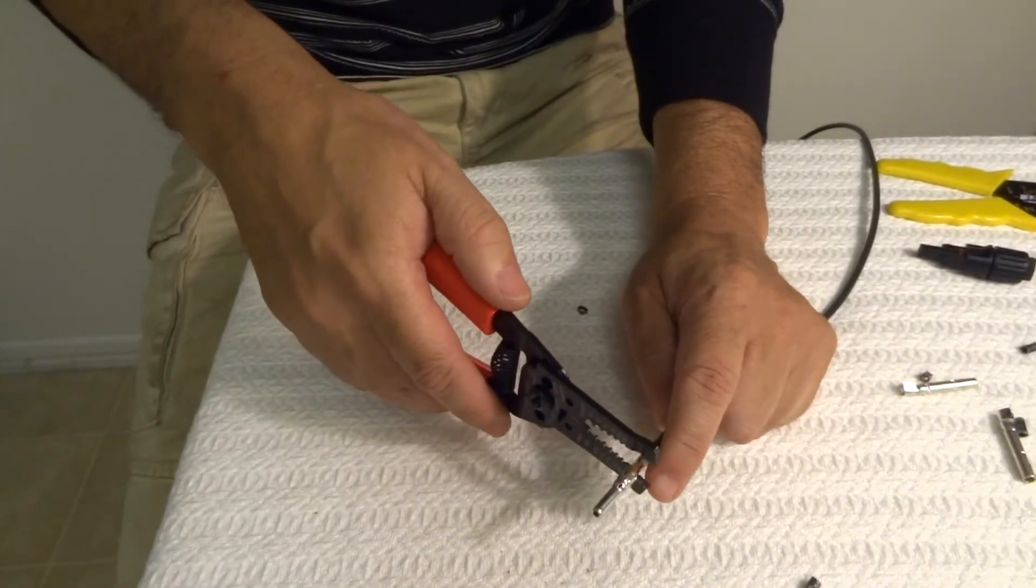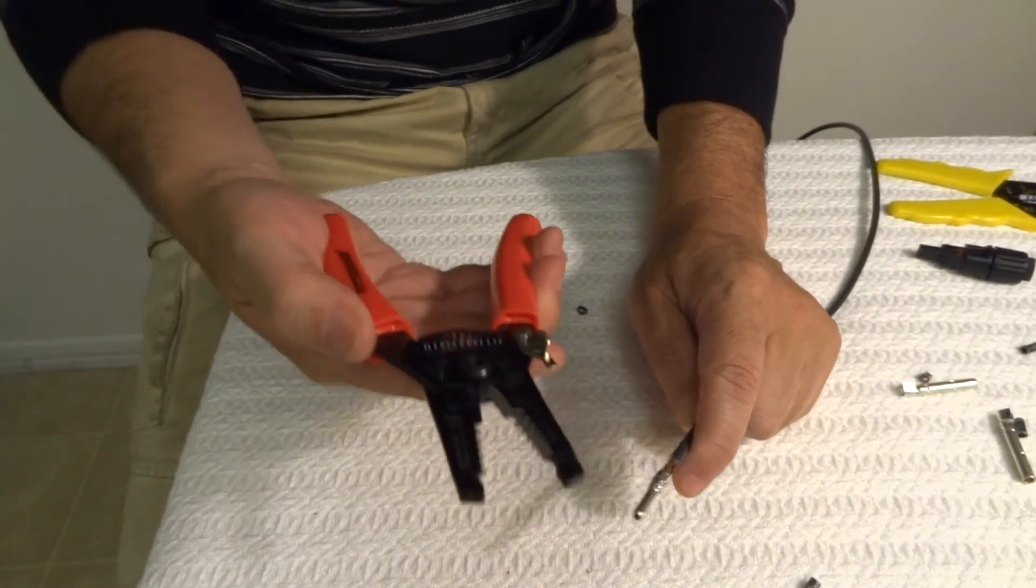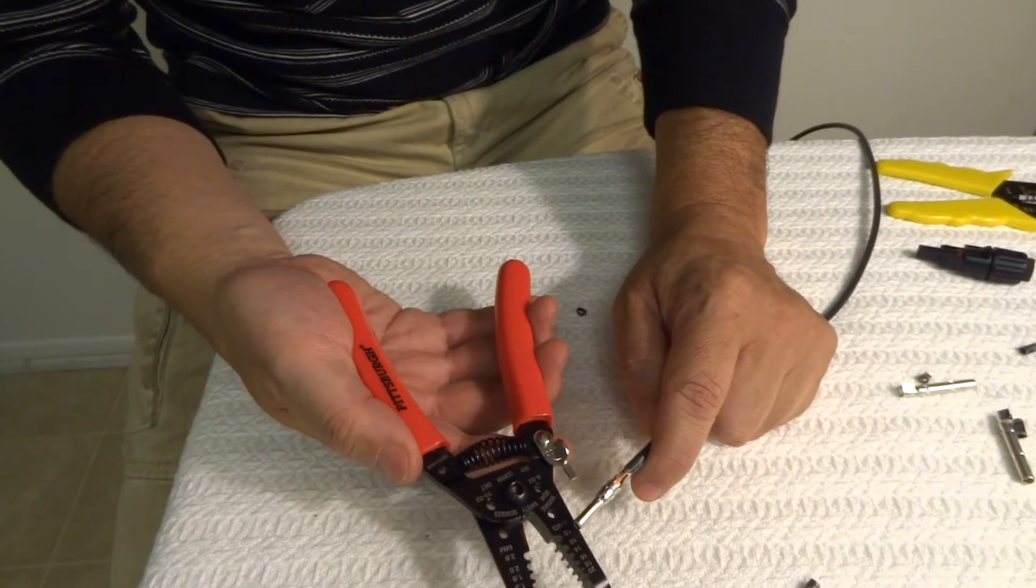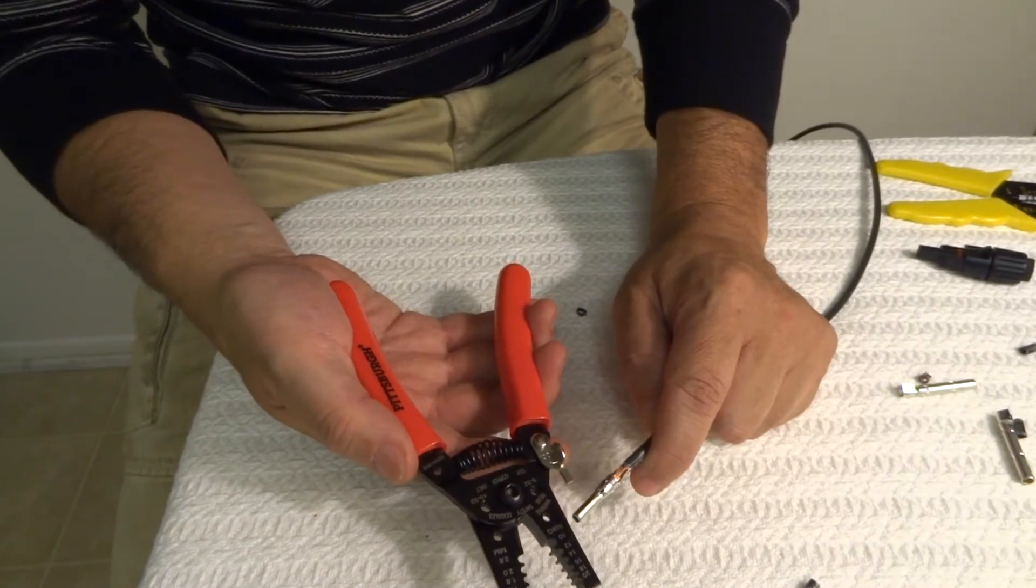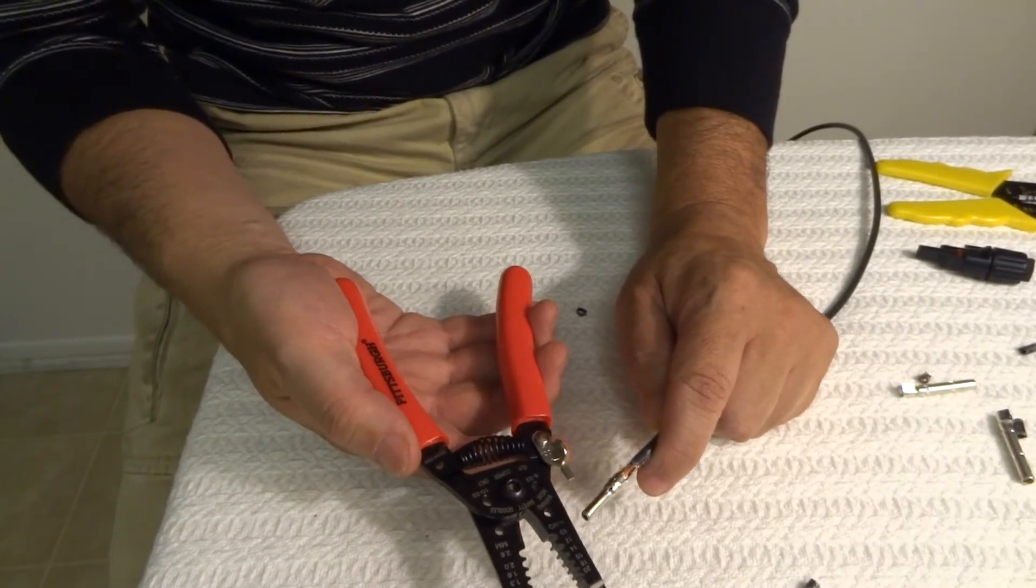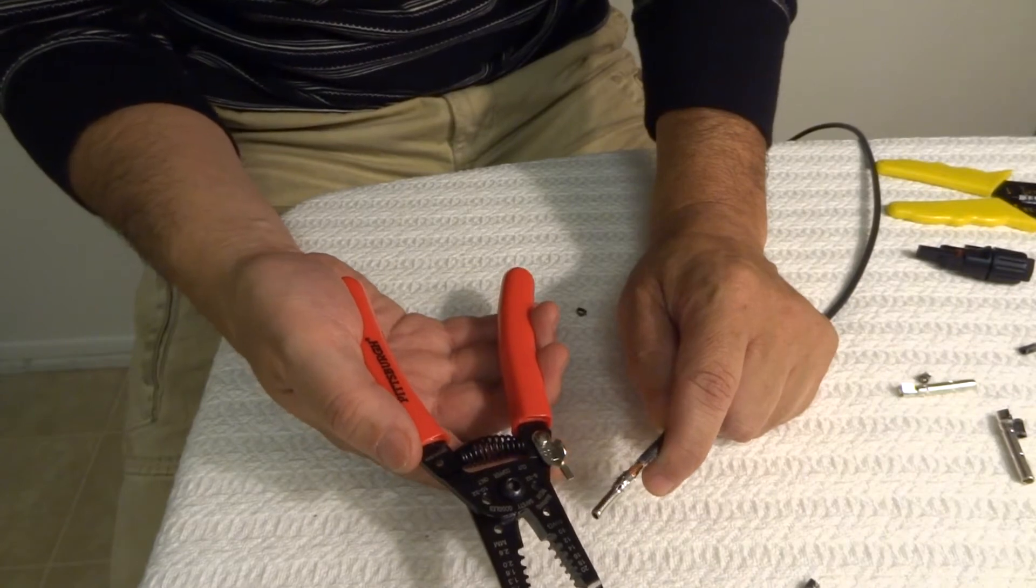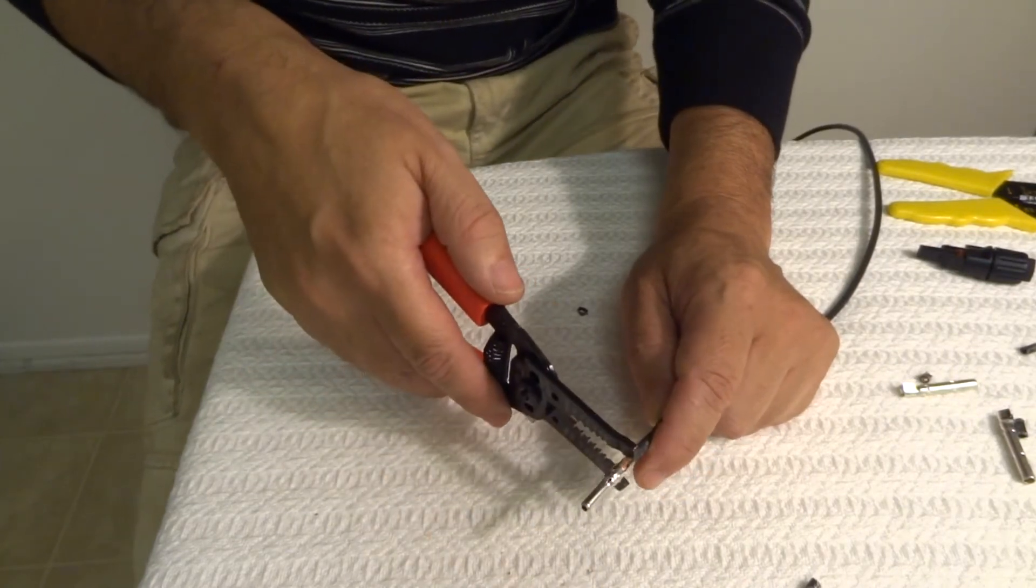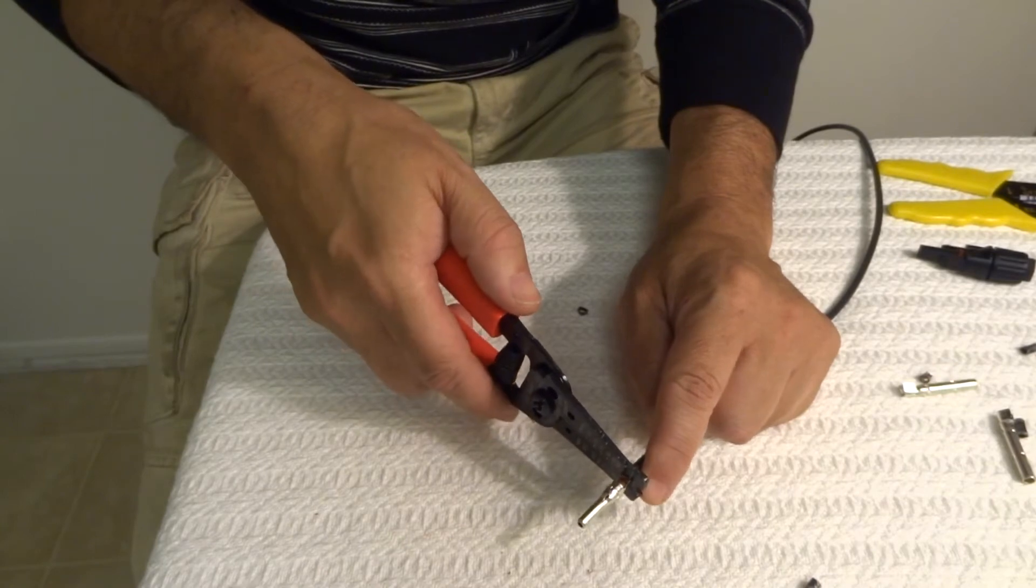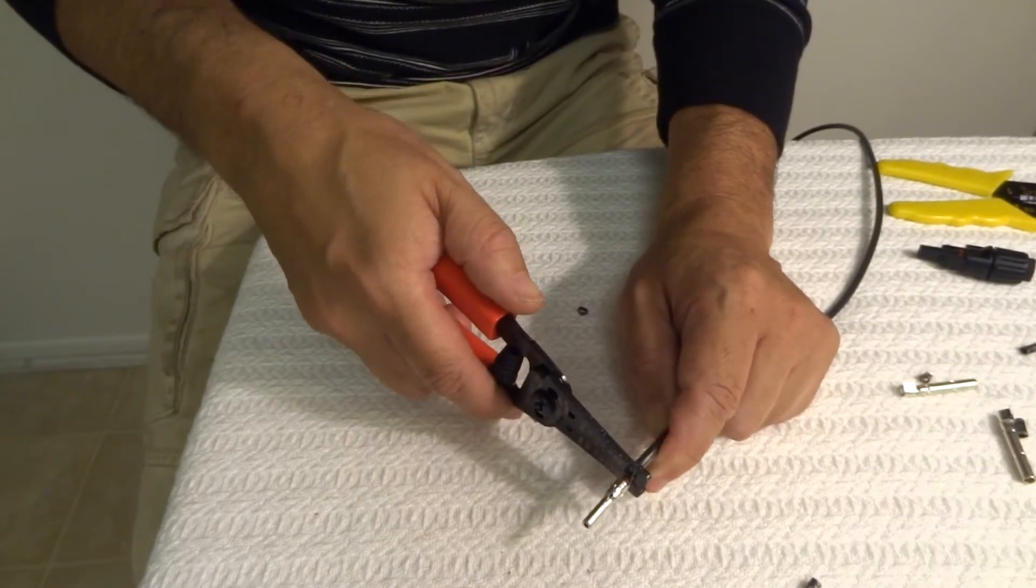So I'm using a regular crimper and this one's up to 10 gauge. Usually when I'm extending I use 8 gauge, but for this example I'm using 10 gauge. This is an appropriate crimper for that.